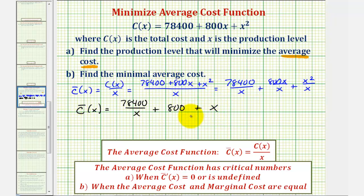To minimize the average cost function, our first step is to find the critical numbers for this function, which occurs where its derivative is equal to zero or undefined, or when the average cost and the marginal cost are equal. We're going to use method A and determine when the derivative of this function is equal to zero or undefined.